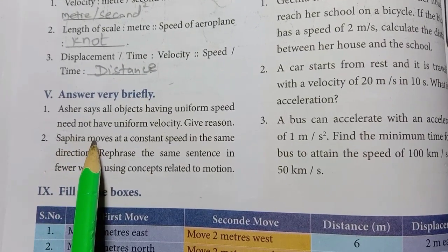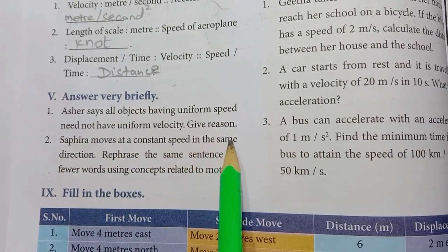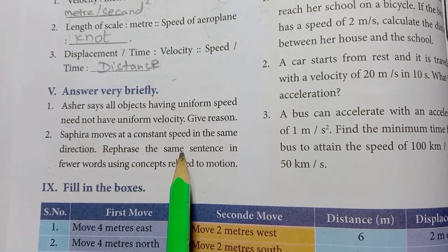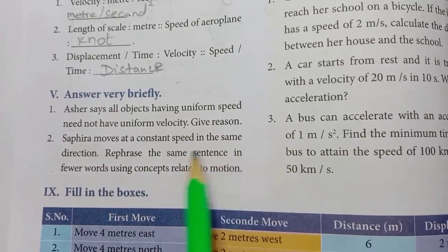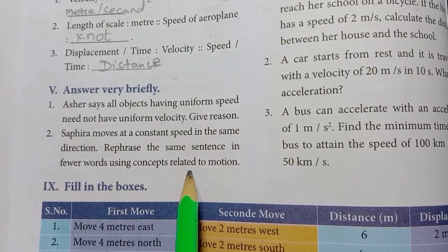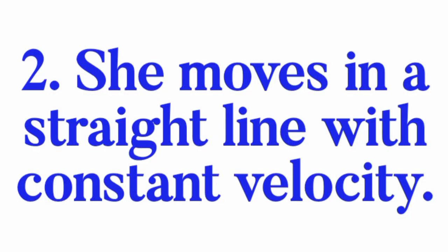2nd one — Safira moves at a constant speed in the same direction. Rephrase using concepts of motion. Answer: she moves in a straight line with constant velocity.